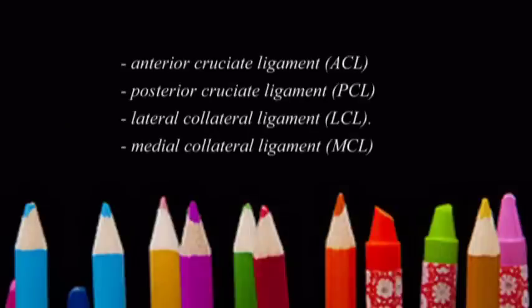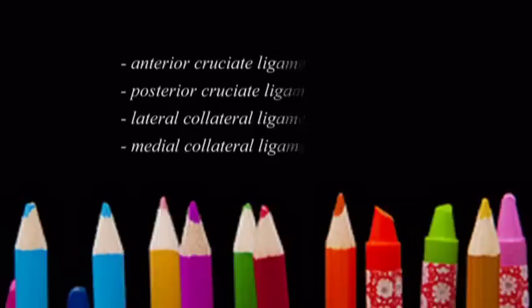An injury to any one of these ligaments can occur when you're playing soccer, and the range of those injuries can be from stretching to partial tearing to complete tearing. A complete tear can lead to instability of the joint and cause an athlete to feel like their knee is giving way when they run, stop, pivot, or jump — any of those movements.